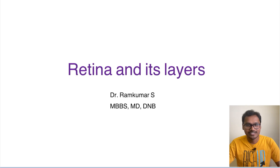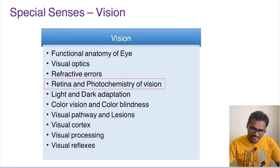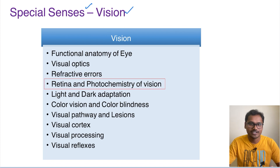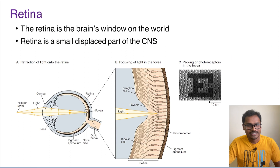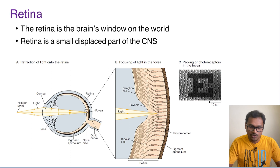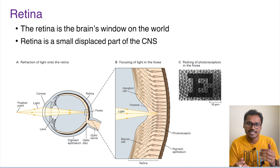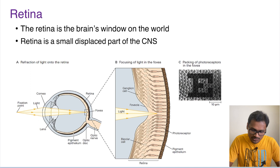Hello everyone. Today we are going to discuss the retina and its different layers. We are discussing our special senses, under which vision is being discussed. Today we will focus on the retina and its different layers; photochemistry of vision will be separately discussed in the next video. The retina is rightly called the brain's window of the world — whatever information we are getting from the surrounding environment is being converted by the photoreceptors and finally transmitted to the brain.